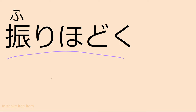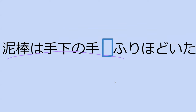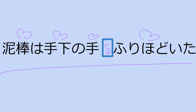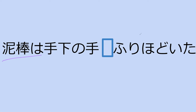Furihodoku is to shake free from something. For example, can you read this? 'Dorobo wa te ka no te o... hodoita.' To break free of the hand. The thief breaks free from the minion's hands. Perfect.